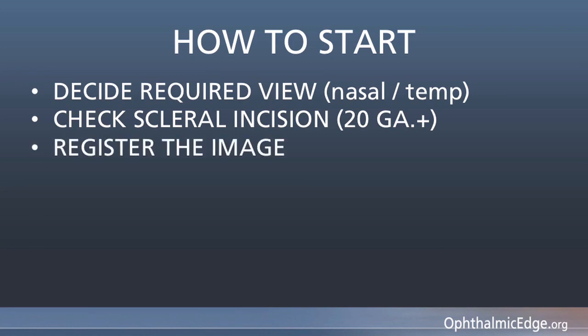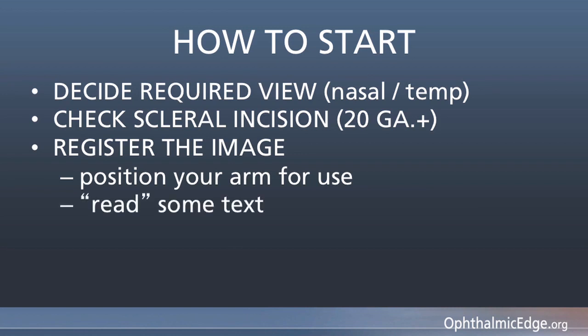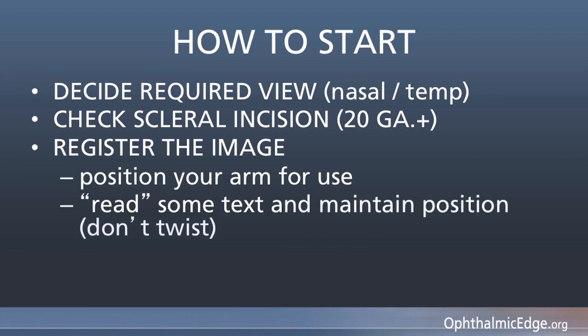I then register the image by positioning my hand next to the patient's brow in a comfortable place. I'll usually ask the scrub nurse to place a written piece of material on the forehead so I can focus the scope and read it off the monitor. If I can read left to right, then I know I have good registration and I'm going to maintain, without twisting the scope, that position as I enter the globe.